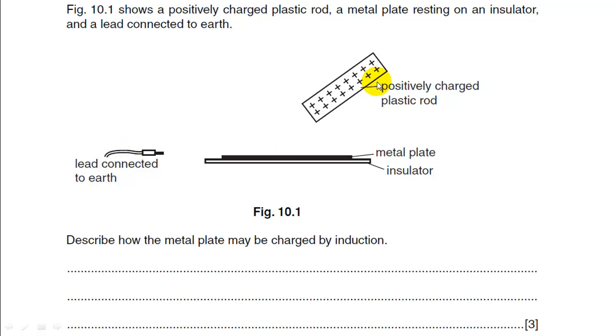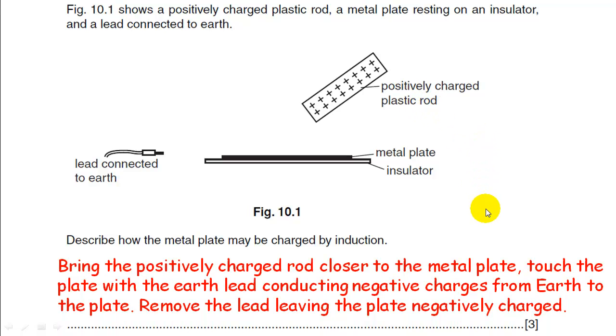And you've got a lead connected to Earth. Now, if you brought the positively charged rod towards the metal plate, it would attract electrons. Negative charges would move towards the positive plate. So if you brought it towards this end of the metal plate, and then you touched the Earth's lead against it, negative charges from the Earth could flow onto the plate. And then if you remove the Earth's lead, those negative charges would be trapped on the plate. Then you could take the charge rod away, and you'd be away. So if you want to read that answer, here it is.